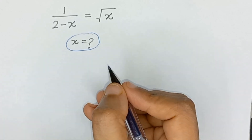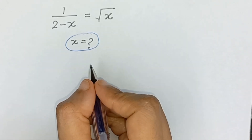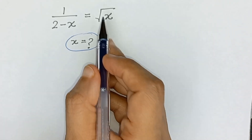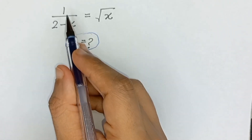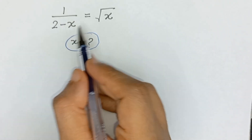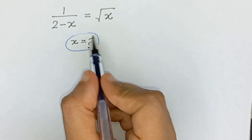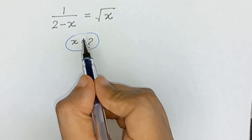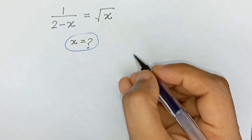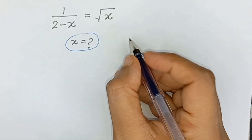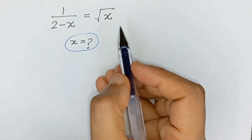Hello friends, welcome back to my channel. In this video we will solve a nice radical equation which is 1 divided by 2 minus x is equal to square root of x, and we will solve for x.